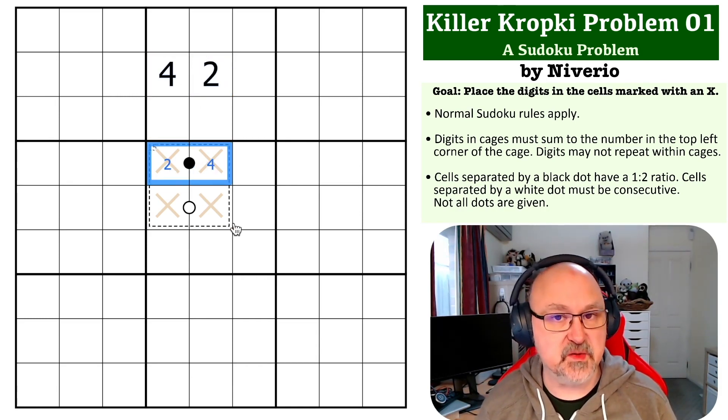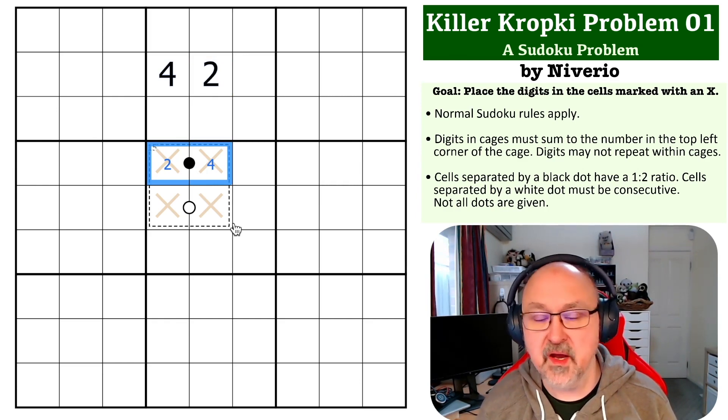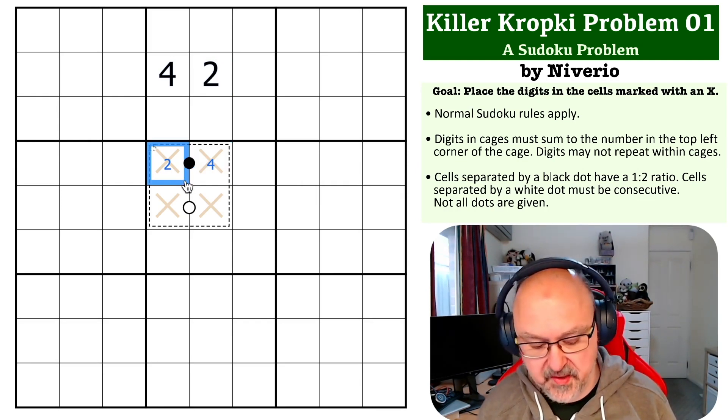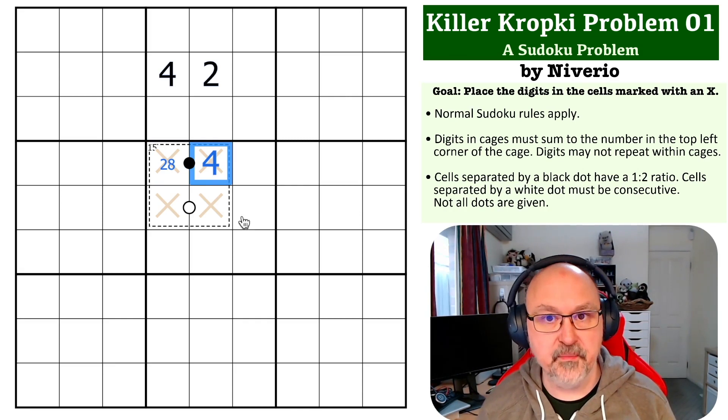The only other one we've got is four-eight, which we could do because four and eight sum to twelve, and this would put an eight here. But either way, this is a four. So we automatically get a four from the parity argument.